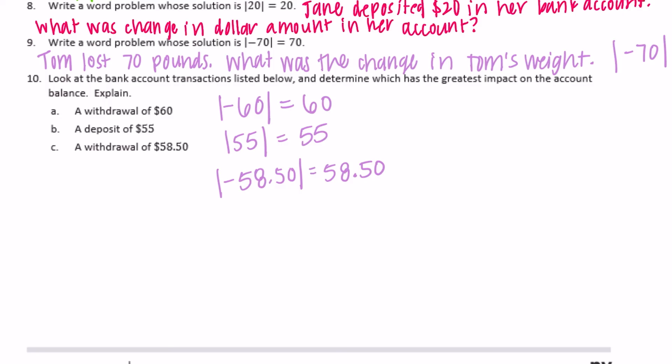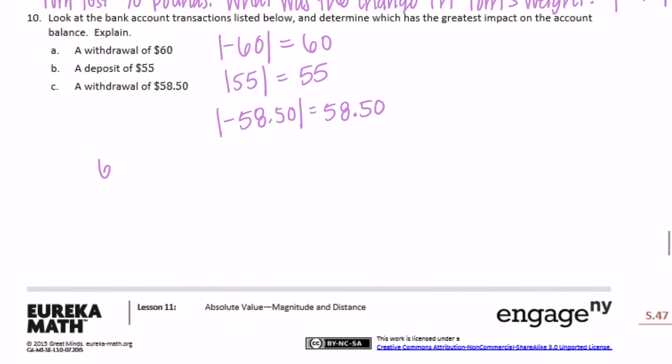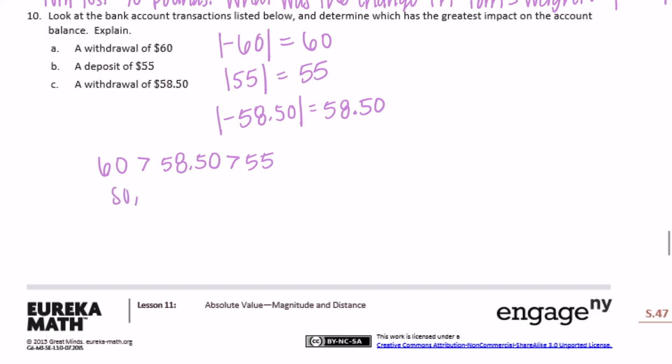And we want to know, determine which one has the greatest impact. So let's just order them from greatest to least. So the greatest is 60. 60 is greater than, next would be $58.50, which is greater than $55. So a withdrawal of $60 had the greatest impact.